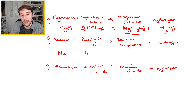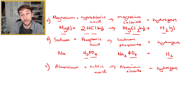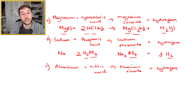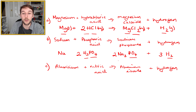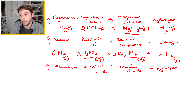Sodium plus phosphoric acid: Na + H3PO4 → Na3PO4 + H2. One phosphate on each side. But hydrogens: two on the right, three on the left. Both 2 and 3 fit into 6, so put a 3 in front of H3PO4 (giving 9 H on left) — wait, we put a 3 in front of H2 to get 6 H on the right, and a 2 in front of H3PO4 to get 6 H on the left. Now two phosphates on the left but only one on the right — multiply Na3PO4 by 2. That gives 6 sodiums on the right, so put a 6 in front of Na. Balanced.